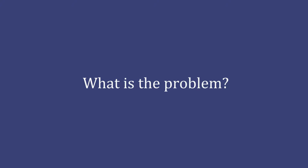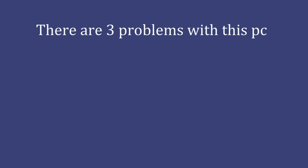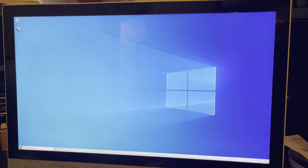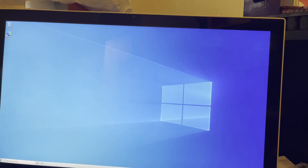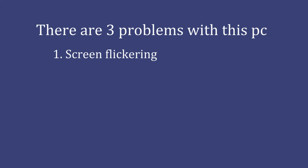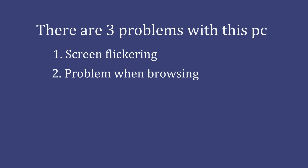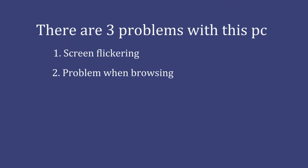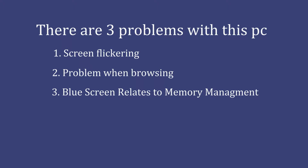So what is the problem? Well, I have three problems with this PC. Number one is when I turn on the PC, the computer screen starts to flicker as you can see here. The screen flickering stays until the computer freezes and then the PC restarts. The second problem is that when I'm browsing online, the computer responds with the following error message: 'This page is having a problem', as you can see on the screen. And the third problem is that we get a blue screen of death with error code memory management.